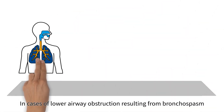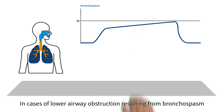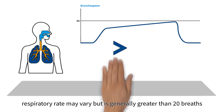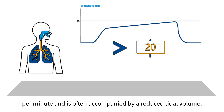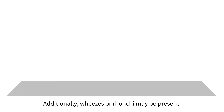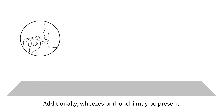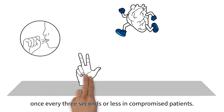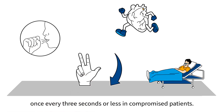In cases of lower airway obstruction resulting from bronchospasm, respiratory rate may vary but is generally greater than 20 breaths per minute and is often accompanied by reduced tidal volume. Additionally, wheezes or rhonchi may be present. The breathing rhythm is usually regular and occurs once every three seconds or less in a compromised patient.